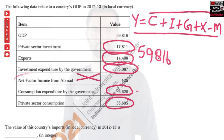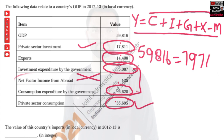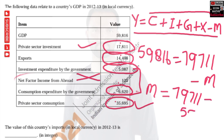So, 59,816 equals the aggregate of C, I, G, and X. G is composed of two terms here, so we add them up. When we add these five values together, we get 79,771. From this we subtract M, the imports. Transposing, M equals 79,771 minus 59,816.